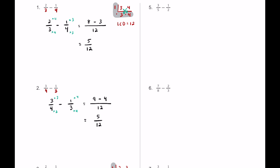For number five we have three-fifths taking away one-half. Five and two are both prime, so their GCF is one. One times five is five, five times two is ten — so the LCD for five and two is ten. Multiplying three-fifths by two over two and one-half by five over five: three times two is six, one times five is five, so six minus five equals one — giving one-tenth.